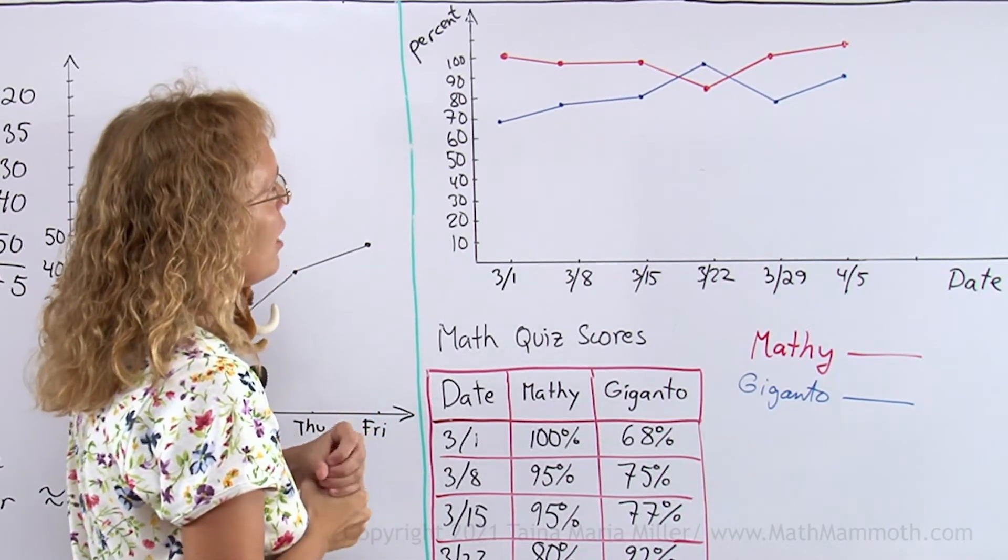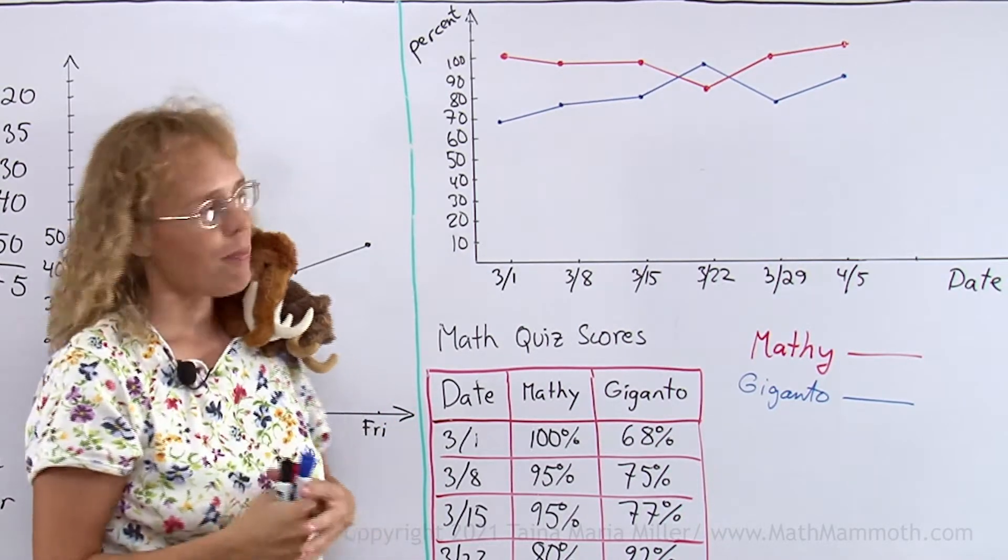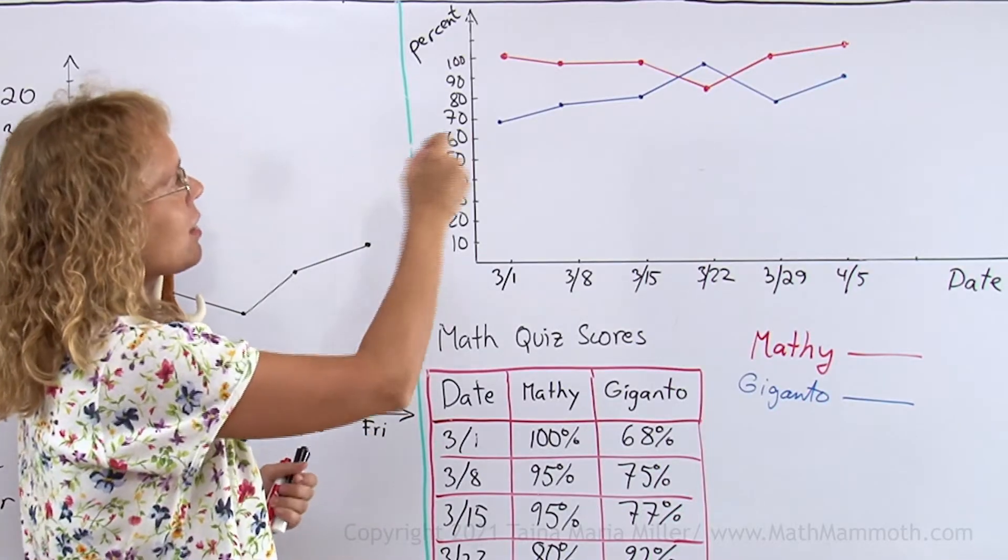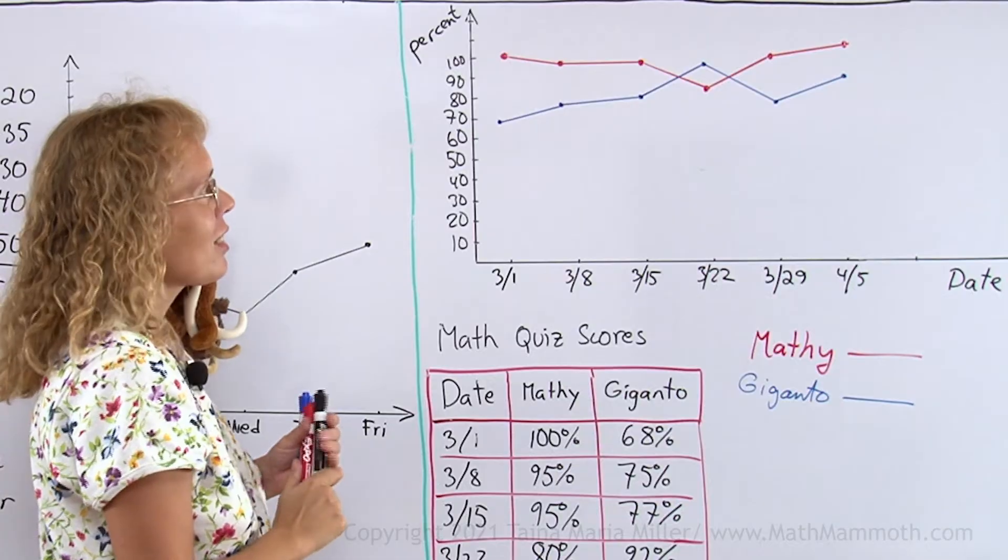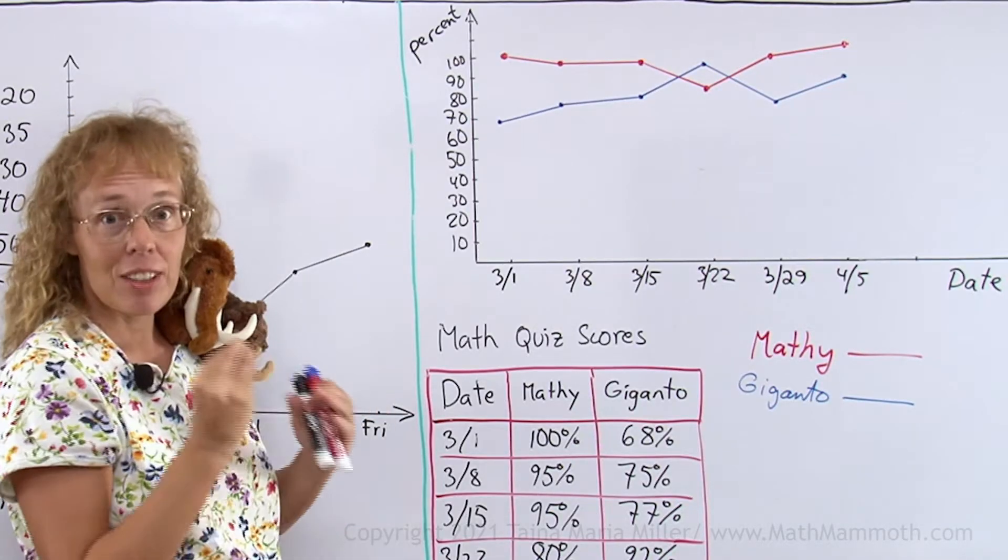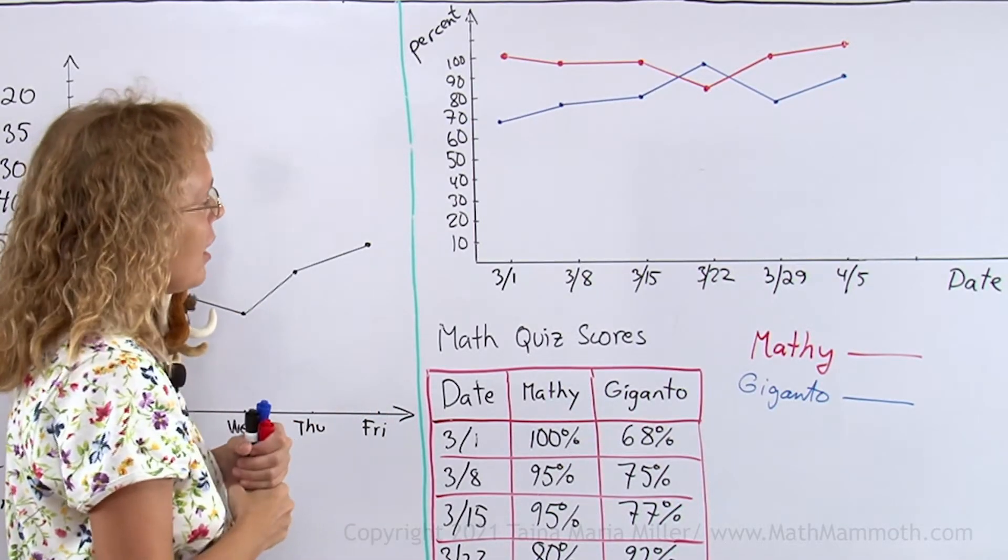And you can probably tell that even without me writing that it's the date. Now, let's describe how did Mathie do, overall. We can see that his graph is pretty steady, except for that one dip, when he didn't study very well. So he's doing steady and very well, very close to 100%.